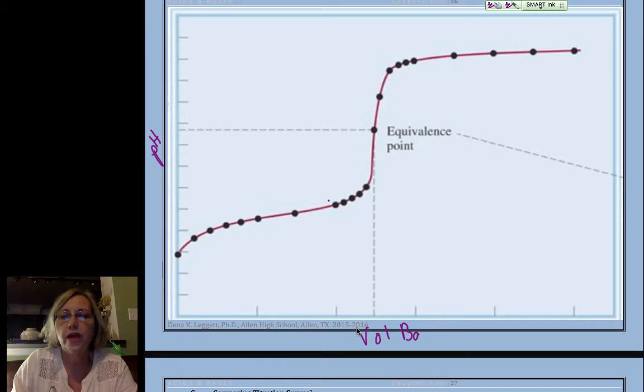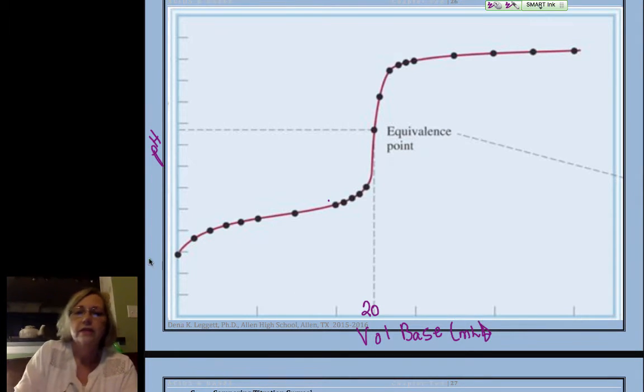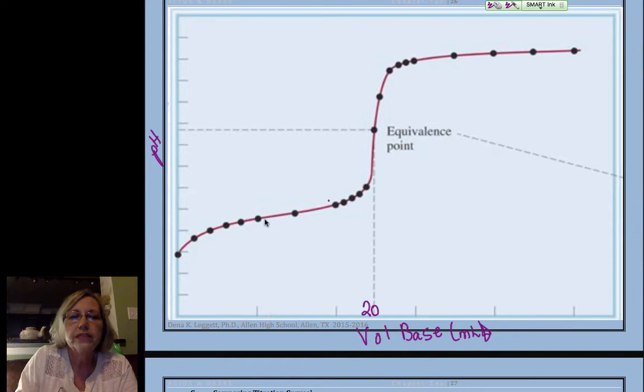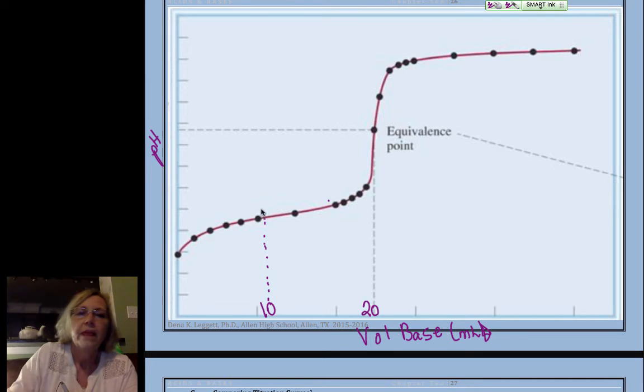In our calculation, we found that our equivalence point was at 20 milliliters. Whoops. Okay, and our half equivalence point somewhere right in here on this drawing would be around right here at 10 milliliters. And that half equivalence point is critical.